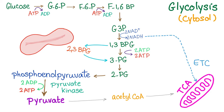Pyruvate kinase is an enzyme in glycolysis. Glycolysis is a process to generate pyruvate as well as ATP, a form of energy, and occurs in the cytosol or the cytoplasm. The red blood cell does not have mitochondria, so the Krebs cycle as well as the electron transport chain cannot occur in the red blood cell, because these processes occur only in the mitochondria.